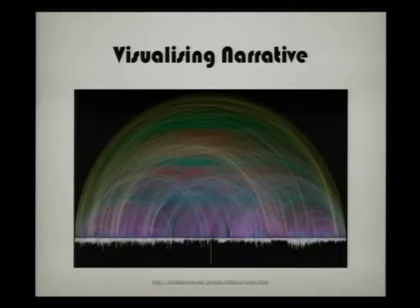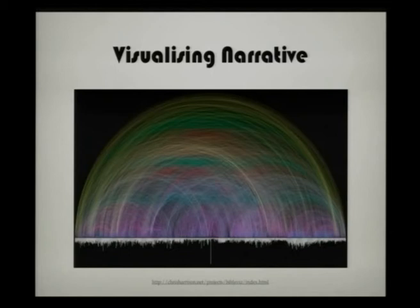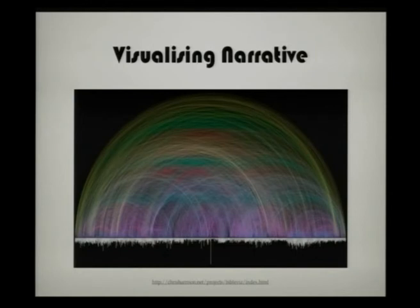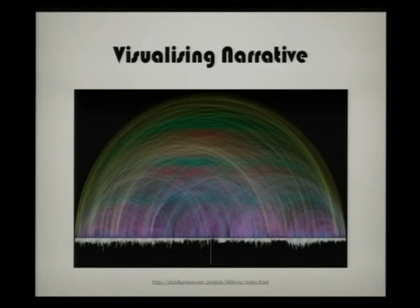Here's another one that's visualising a narrative — this is actually the Bible. Down the bottom there is each of the different chapters, and where cross-referencing occurs in the Bible that's what's causing these arcs. Depending on how far apart the cross-references are, you get a different colour arc. The artist thought about that to make a visual aesthetic, which is why we've got the greens and yellows up the top. I think it's a very beautiful thing just to look at. The artist says the purpose was just to make something beautiful and to spark some thought. You don't necessarily have to understand what the cross-references are — it's just a beautiful image.